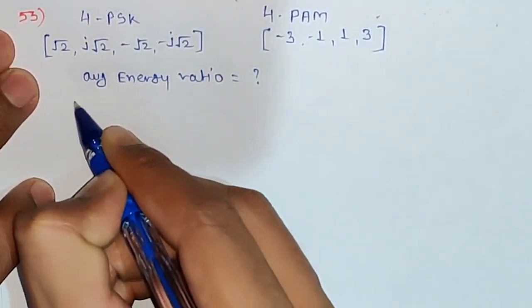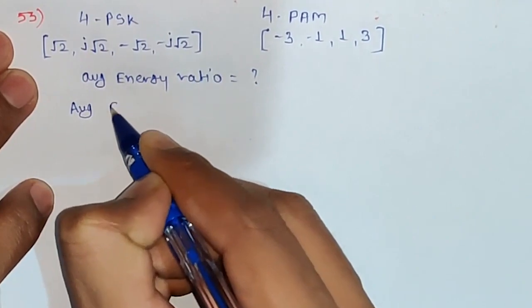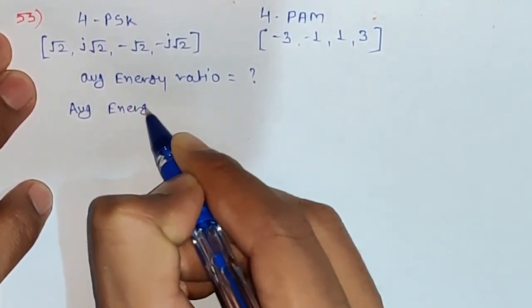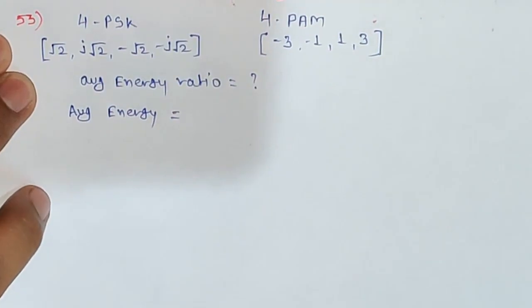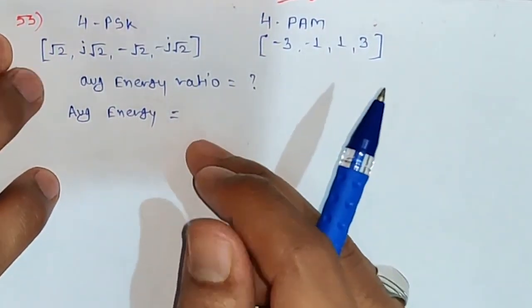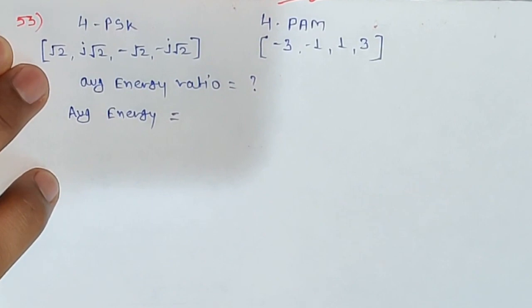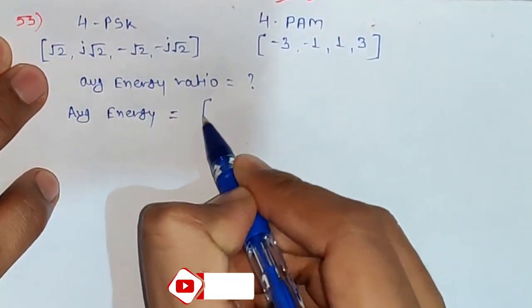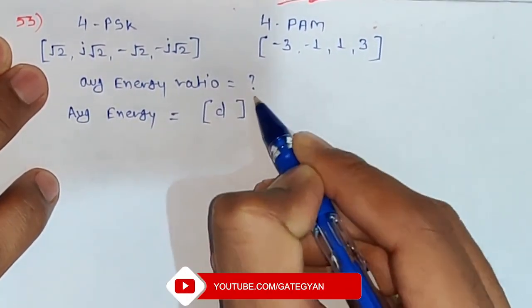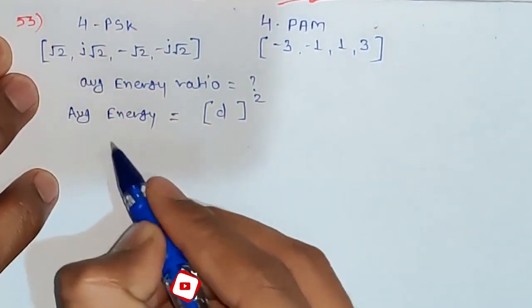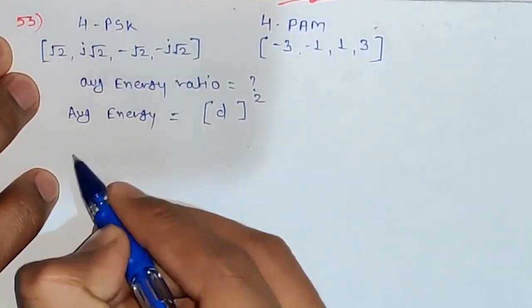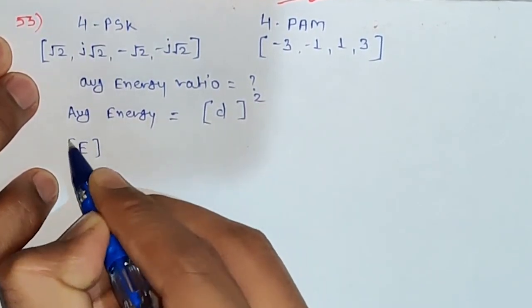First of all, what is average energy? How do you calculate average energy? You can calculate it as the distance squared. The energy is given as d squared, where constellation points are given, so you can calculate the average energy.